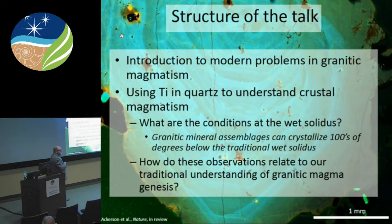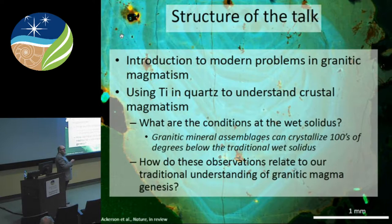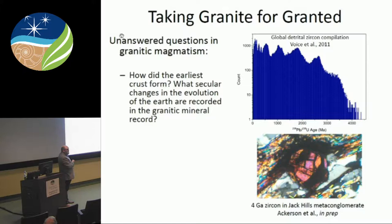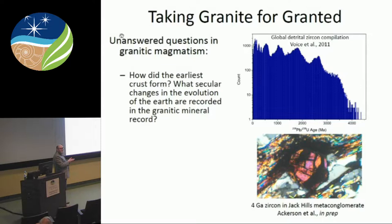Many people think that granites are figured out — I don't think we even have a clue. The surprising conclusion I hope to convince you of is that granites and granitic mineral assemblages can crystallize from a fluid at temperatures hundreds of degrees below the traditional wet solidus, or the low temperature limit we think of for granitic rocks. At the end, I'll discuss zircons in the global detrital zircon record — most of these zircons crystallize from granitic melts, and quite rapidly after the beginning of the Earth we have crystallization of zircons from granitic melts.